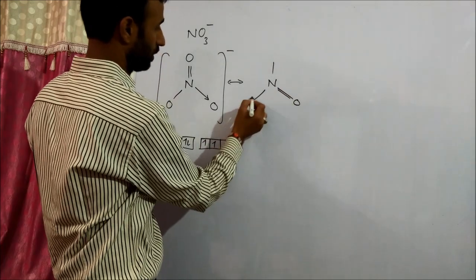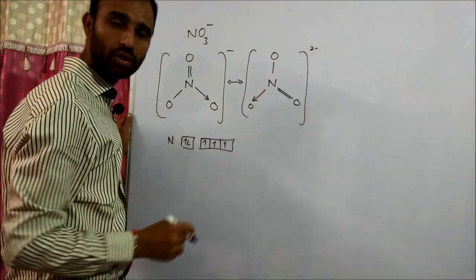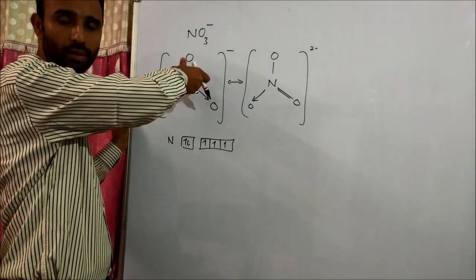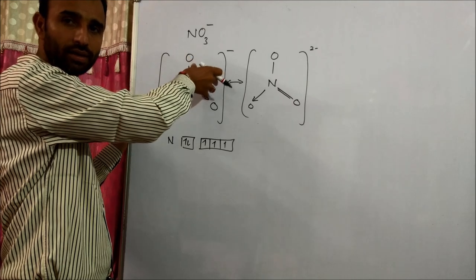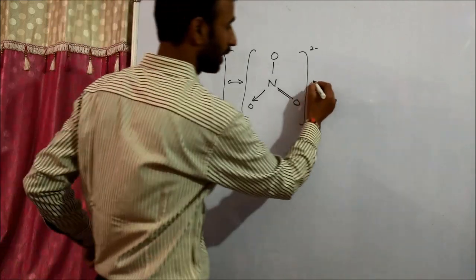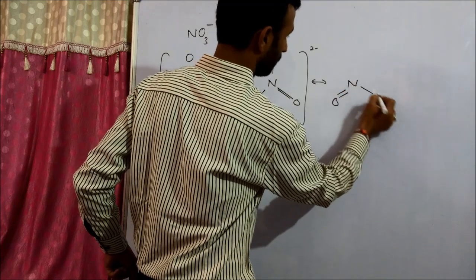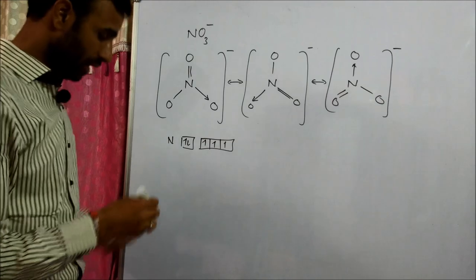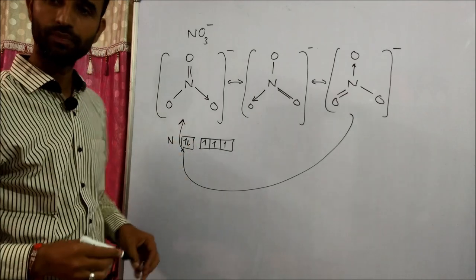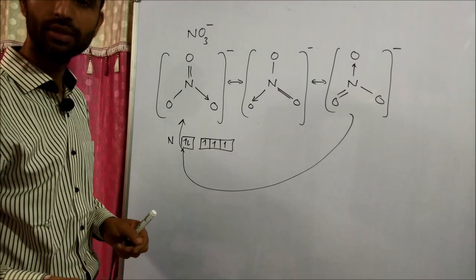This is also one way to write resonating structures — just rotate the structure clockwise or anti-clockwise until the original structure returns. Rotating once gives: double bond, coordinate bond, single bond. Rotating again gives: double bond, single bond, coordinate bond. Rotating once more returns to the original. That means these are the three resonating structures of the nitrate ion.